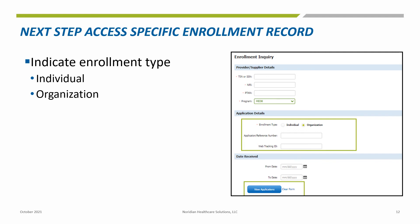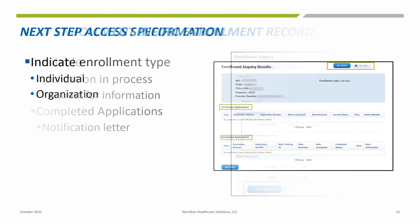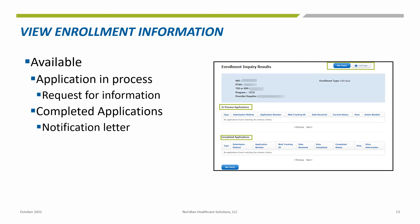Once all the identifying information is entered, you are now able to access the application. Once a record is accessed, you will be able to see it under In Process. If any requests for information require responding to, view the correspondence — this may also be downloaded. To upload a response, select Submit, New Documentation, and upload as needed. When complete, use the back buttons to return to the search. Under Completed Applications, you will see notification letters and be able to download them. Select New Inquiry if another search is needed.